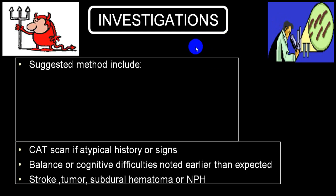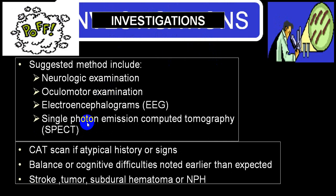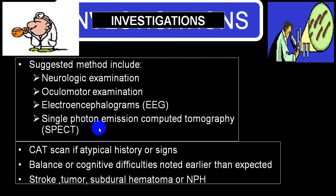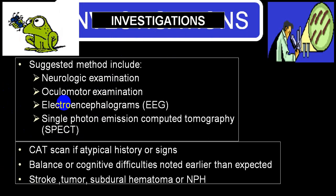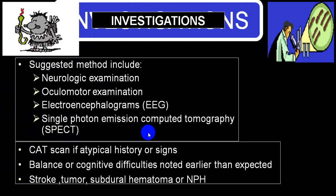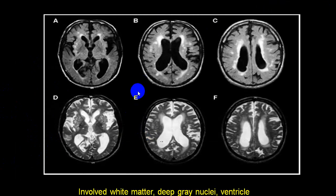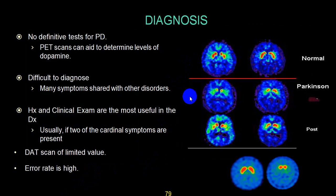As far as investigation is concerned, the best is the clinical method — neurological examination, oculomotor examination, EEG, and SPECT scan. SPECT scan demonstrates degeneration of those neurons. Neurological examination gives the majority of information, and SPECT scan gives the best idea regarding neuronal degeneration. CT scan may give a rough idea, but PET and SPECT scans give the best information regarding degenerative areas.